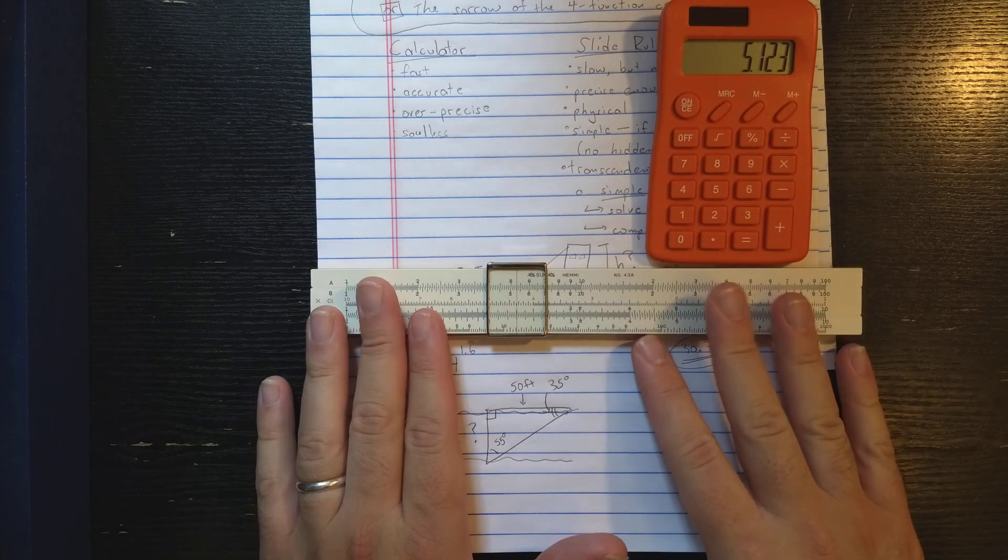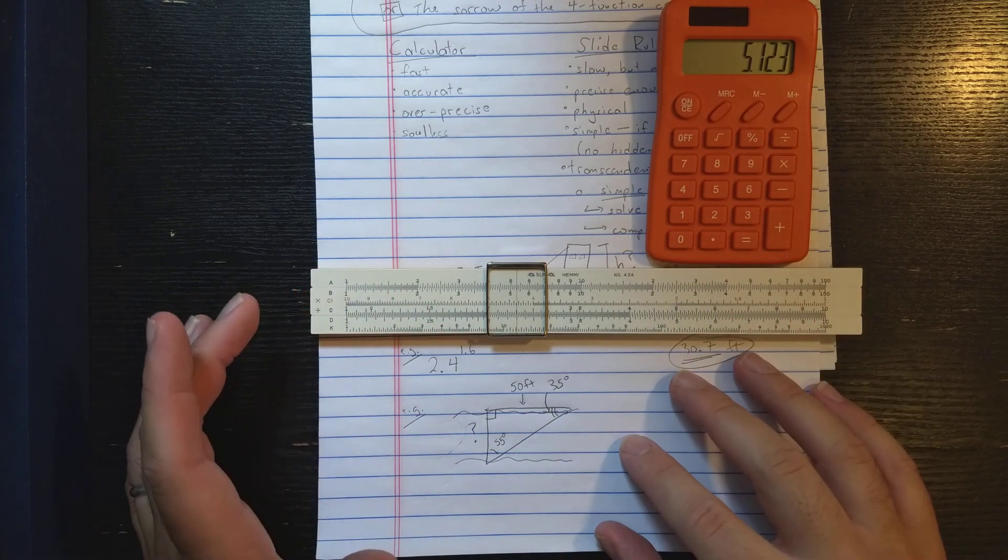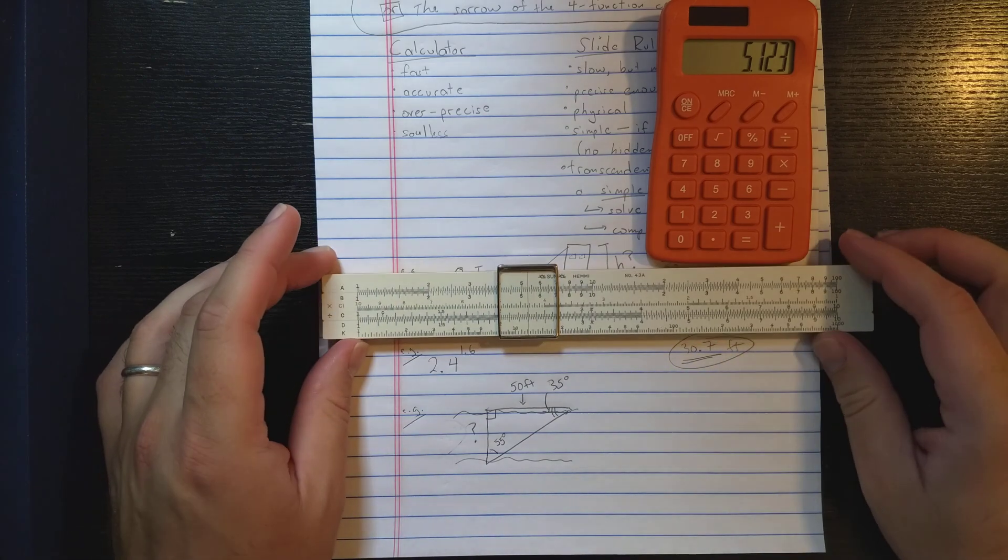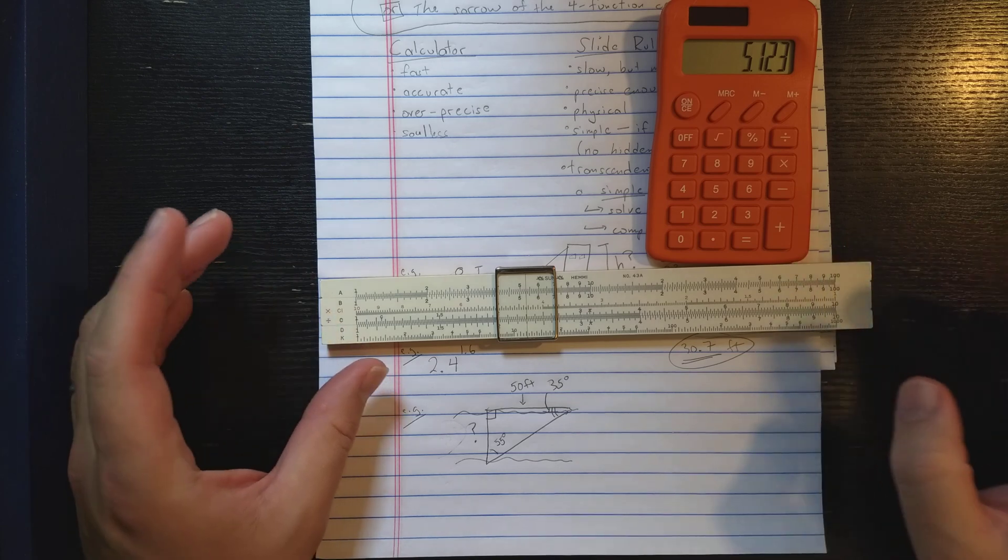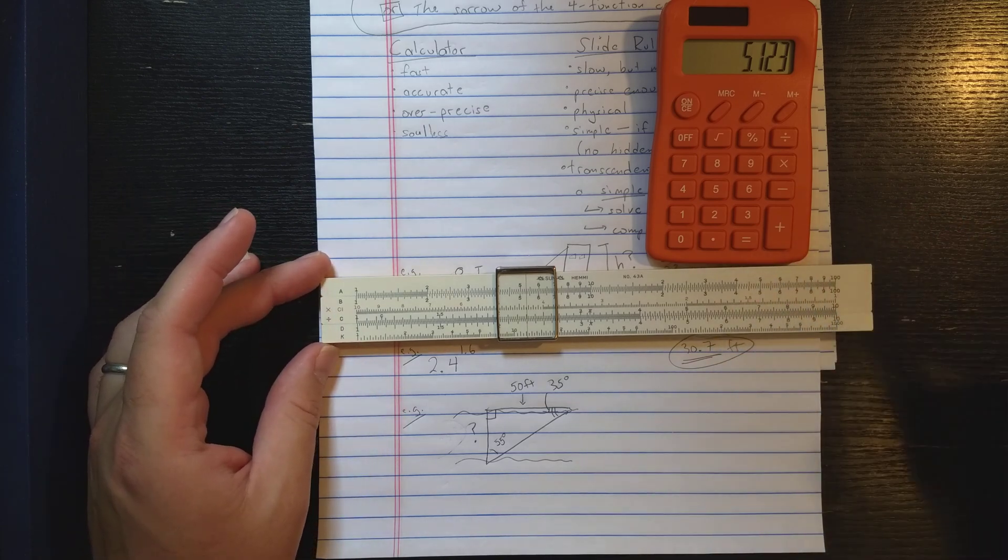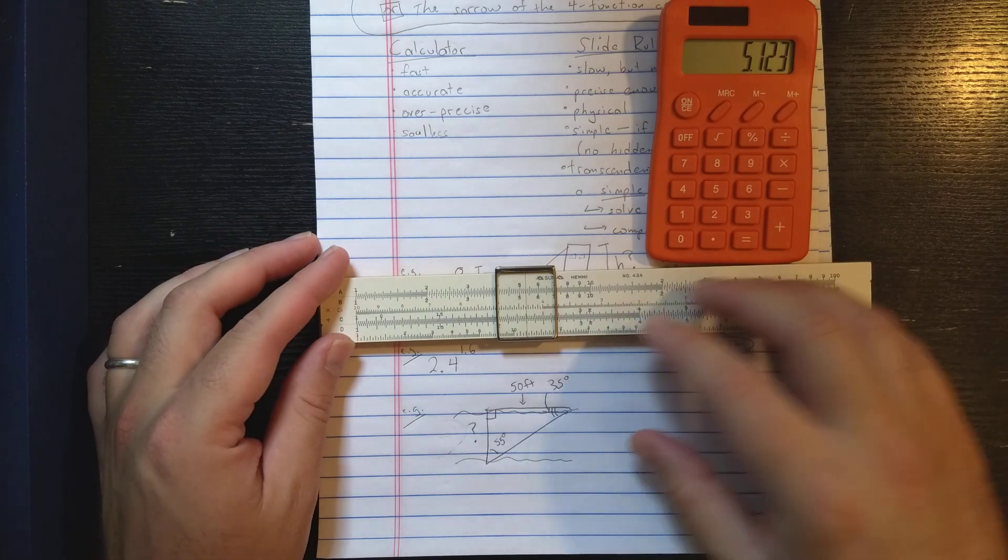So I think that the slide rule kind of demystifies the transcendental functions a little bit, right? All the transcendental functions basically that you need to compute until much later in school can be done on the basic slide rule.